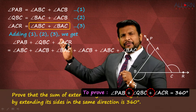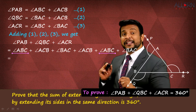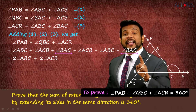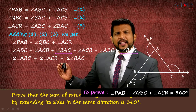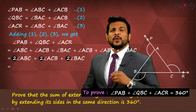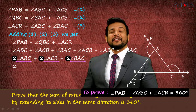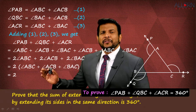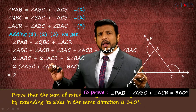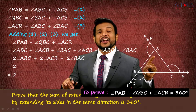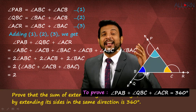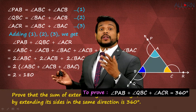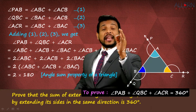The left-hand side remains as is. On the right-hand side: angle ABC appears twice giving 2×angle ABC; angle ACB appears twice giving 2×angle ACB; angle BAC appears twice giving 2×angle BAC. Taking 2 common, we get 2×(angle ABC + angle ACB + angle BAC). These three are the interior angles of triangle ABC, and by the angle sum property of a triangle their sum equals 180°. So the right-hand side becomes 2×180°.